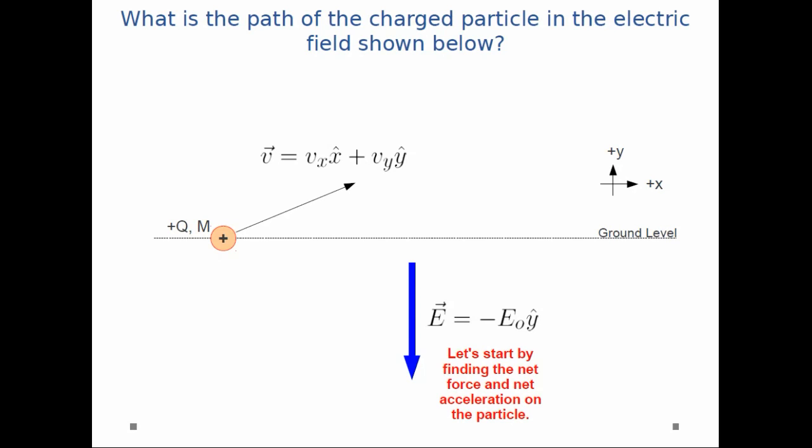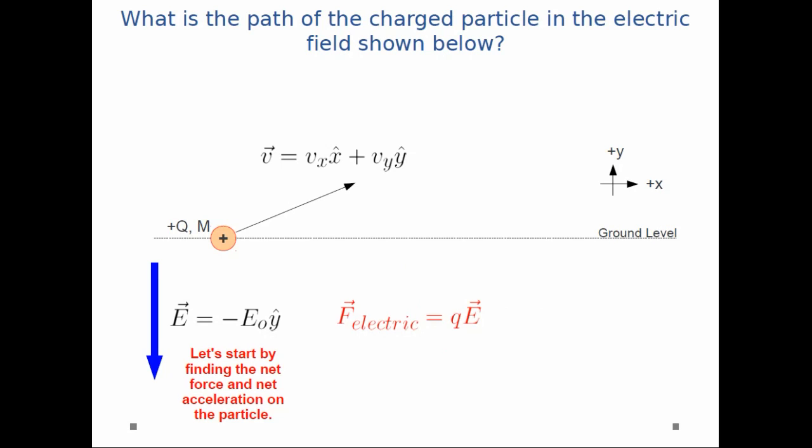So let's start by finding the net force and the net acceleration on the particle. We know that the electric force on the particle is equal to q times e and by Newton's law the net force on the particle is just m times a. So if we combine those together we get q e equals m a and substituting in the values that we have in this problem we get the acceleration of this particle.